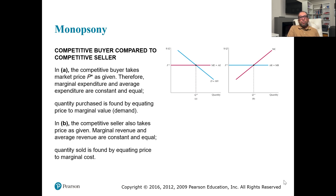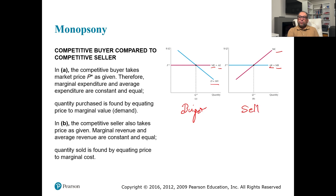Comparing a competitive buyer to a competitive seller — in Figure A, we see marginal expenditure and average expenditure, just like average revenue and marginal revenue. For a competitive firm, both of these are equal. The buyer has a demand curve and the seller has a supply curve. The buyer equates the demand curve with the marginal expenditure curve to find quantity.